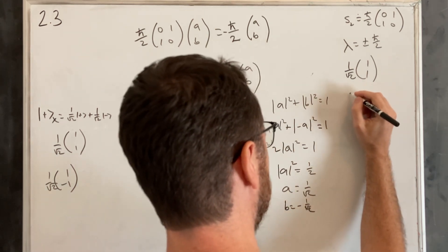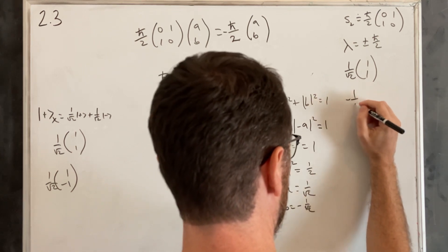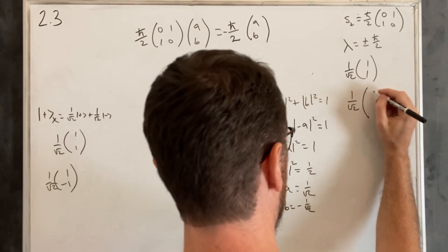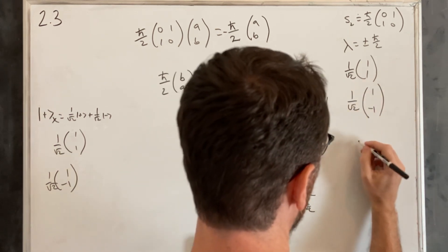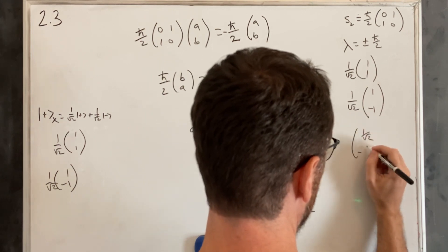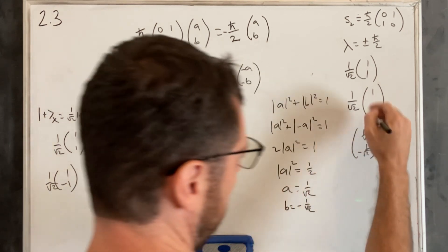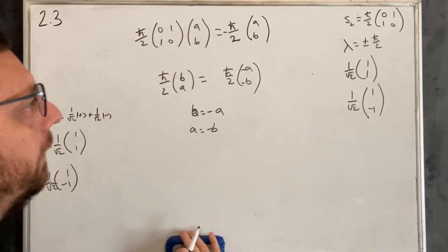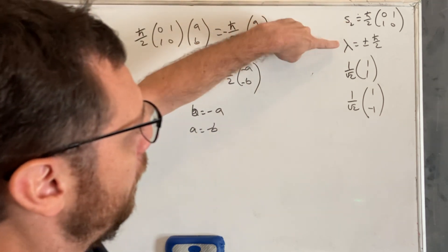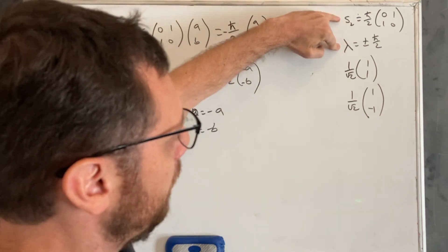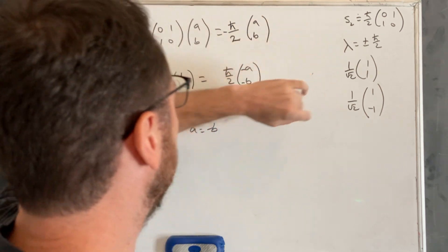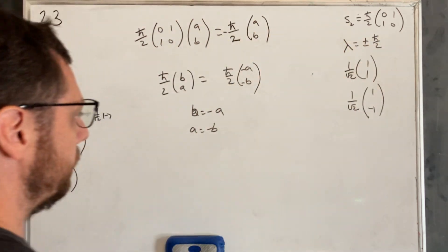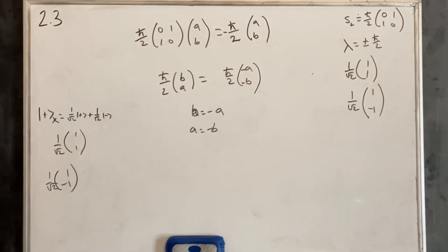So the second eigenvector is (1/√2)·[1,−1], or equivalently written as [1/√2, −1/√2]. To recap: we found the S_z operator in the X basis to be (ℏ/2)·[[0,1],[1,0]], with eigenvalues ±ℏ/2 and eigenvectors (1/√2)[1,1] and (1/√2)[1,−1]. Very similar to problem 2.2, but hopefully that all made sense.